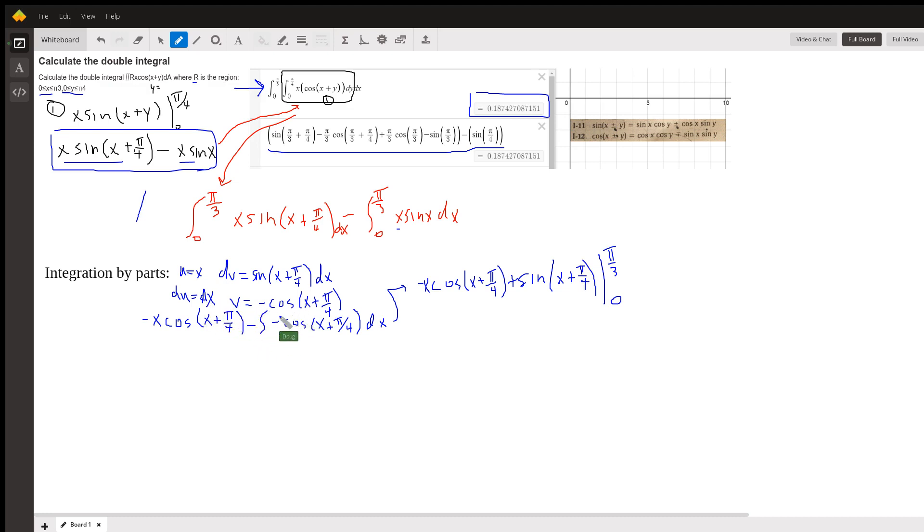Here's v, du is dx. I can move this minus out front and that'll become plus. And the anti-derivative of the cosine of x plus pi over 4 is the sine of x plus pi over 4.